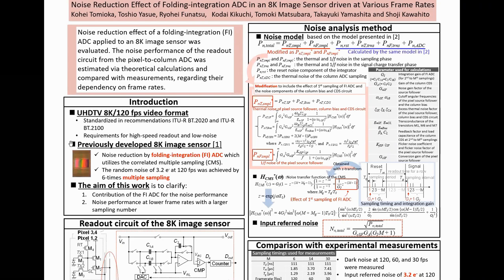We previously developed an 8K image sensor with a folding integration FIADC that utilizes a correlated multiple sampling technique to improve the noise performance. The random noise of 3.2 electron at 120 FPS was achieved by 6 times multiple samplings.